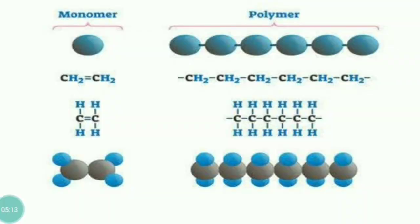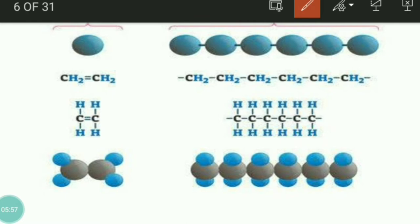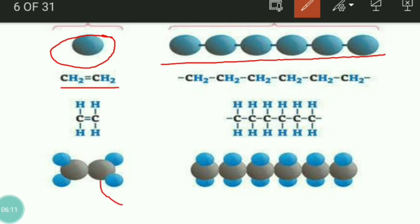Before moving ahead, I want you to understand two terms: monomer and polymer. The small repeating unit is termed as monomer. If this single unit is the formula of the monomer, then monomers combine together to form a polymer. So monomers combine to form a polymer.